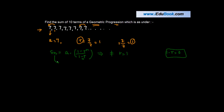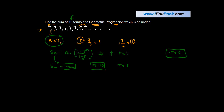When r = 1, the sum of a geometric progression is taken as Sn = n·a, where n is the number of terms and a is the first term. So here, n = 10 and a = 7, giving us Sn = 10 × 7 = 70.